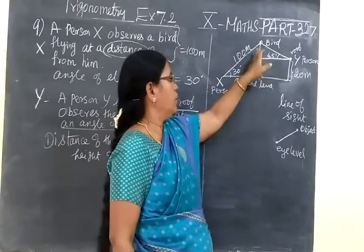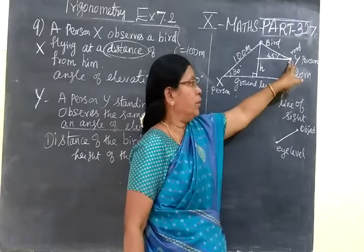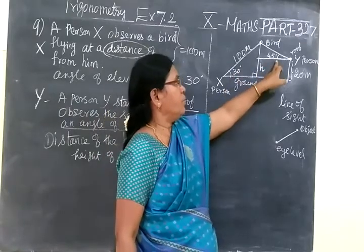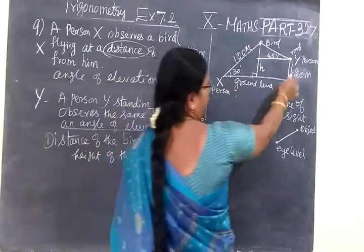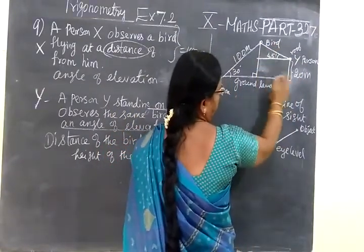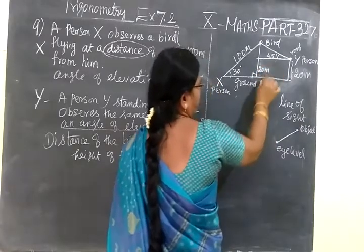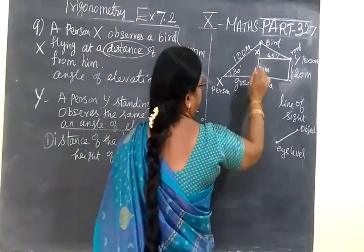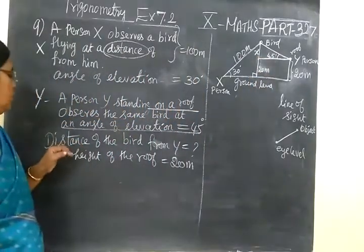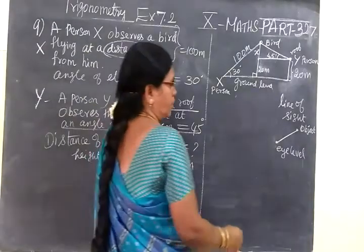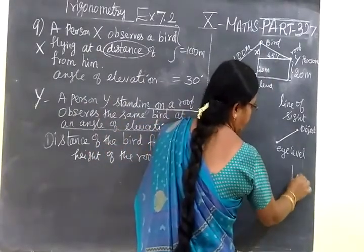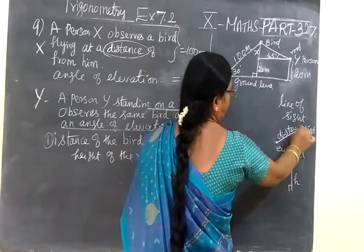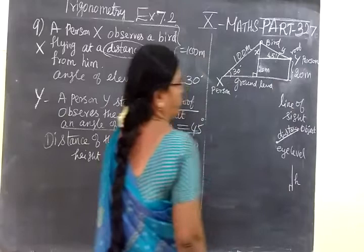Person Y, who is standing on the roof of the building, observes the same bird. The angle of elevation from X is 30 degrees and from Y is 45 degrees. The height of the roof equals 20 meters, so this side is also 20 meters — opposite sides of the rectangle are equal. The unknown vertical distance above the roof we keep as S. We want to find the distance of the bird from Y, which we call Z.